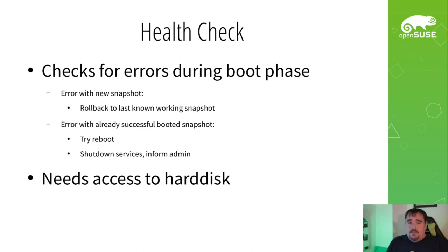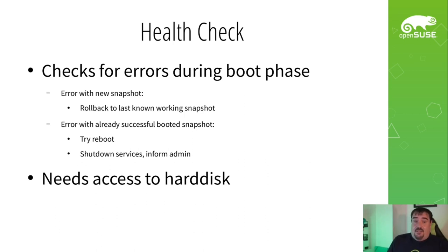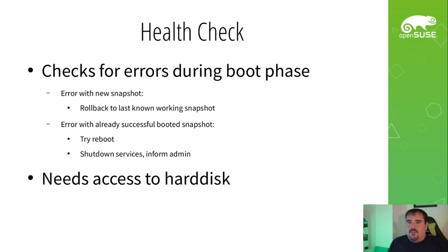We actually have a process called HealthChecker which can do this as part of built-in automation of MicroOS, checking for errors as part of the boot phase. If there is an error with that snapshot, it'll go back to the last working one. HealthChecker can even look at weird transient issues where the snapshot used to work but then suddenly started breaking again — in which case it'll actually try rebooting just like a sysadmin would. If that doesn't work, it'll shut itself down and inform the sysadmin so you know something's gone wrong. One limitation of HealthChecker is it needs access to the hard disk — but if the system doesn't have a hard disk, it's probably not booting anyway.